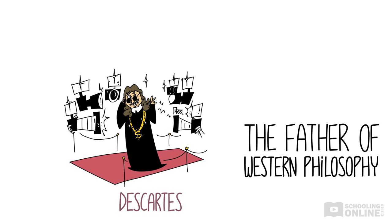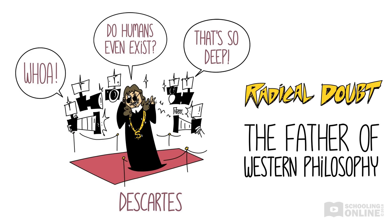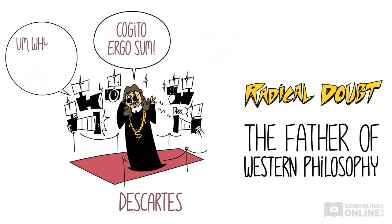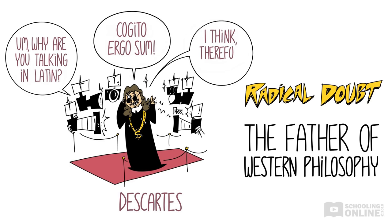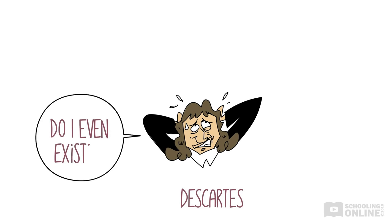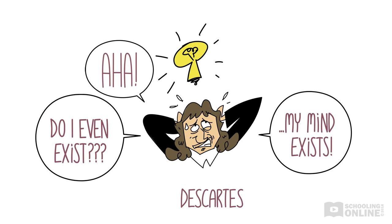He questioned whether it's reasonable to claim that humans even exist at all. His position is called radical doubt. Maybe you have heard his most famous argument, cogito ergo sum, which is Latin for 'I think, therefore I am,' or 'I think, therefore I exist.' One day, while Descartes was worrying about whether he even existed or not, he realized that he was thinking about existence. He thought: the fact that I doubt my existence means that my mind exists. For Descartes, the only way that people can know we exist is the fact that we are thinking about whether we exist or not.